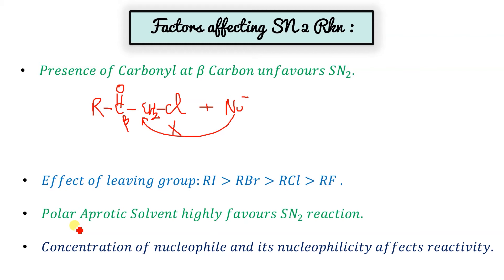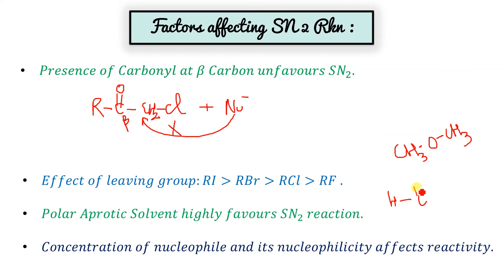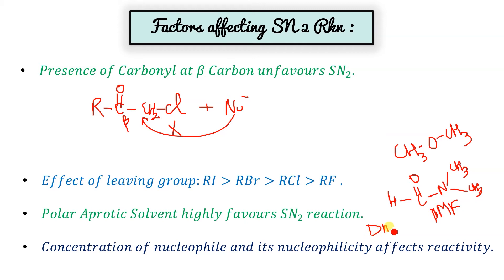Examples of polar aprotic solvents include dimethyl ether, DMF (dimethylformamide), and DMSO (dimethyl sulfoxide). For example, acetone (CH3CO) has electronegativity difference but does not give H+ — that's polar aprotic. DMF has a dimethyl amino group attached to a formyl group. DMSO has two methyl groups attached to an SO group.